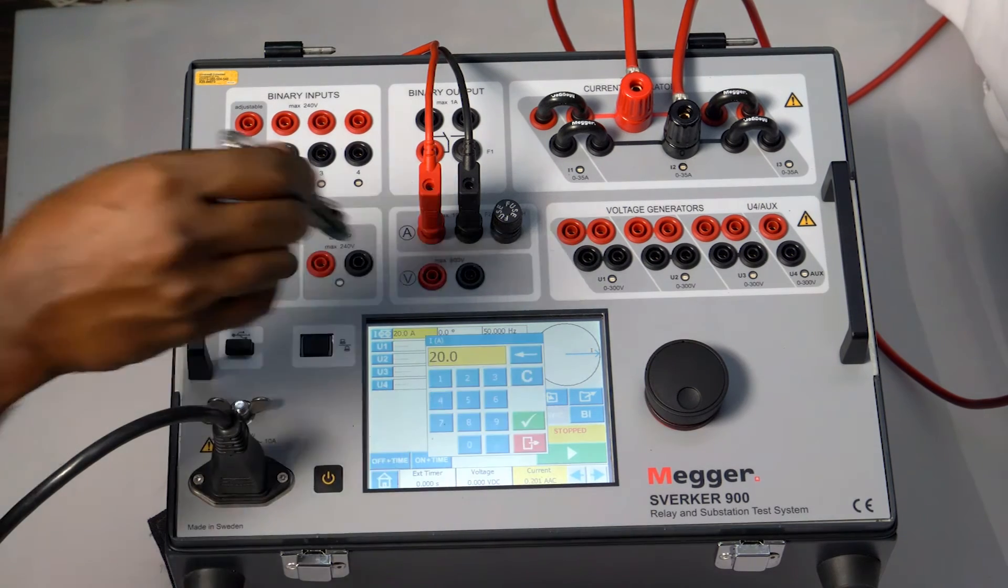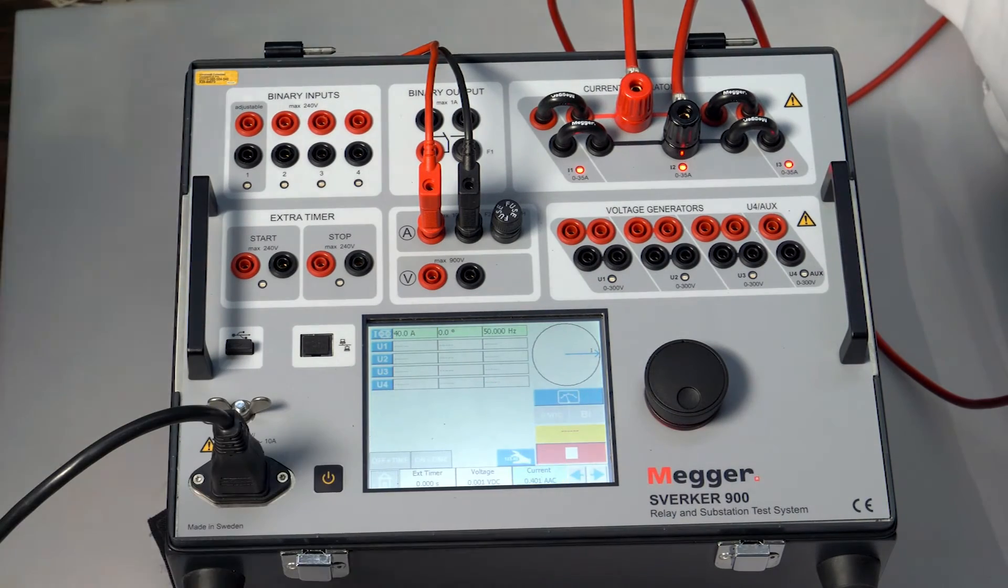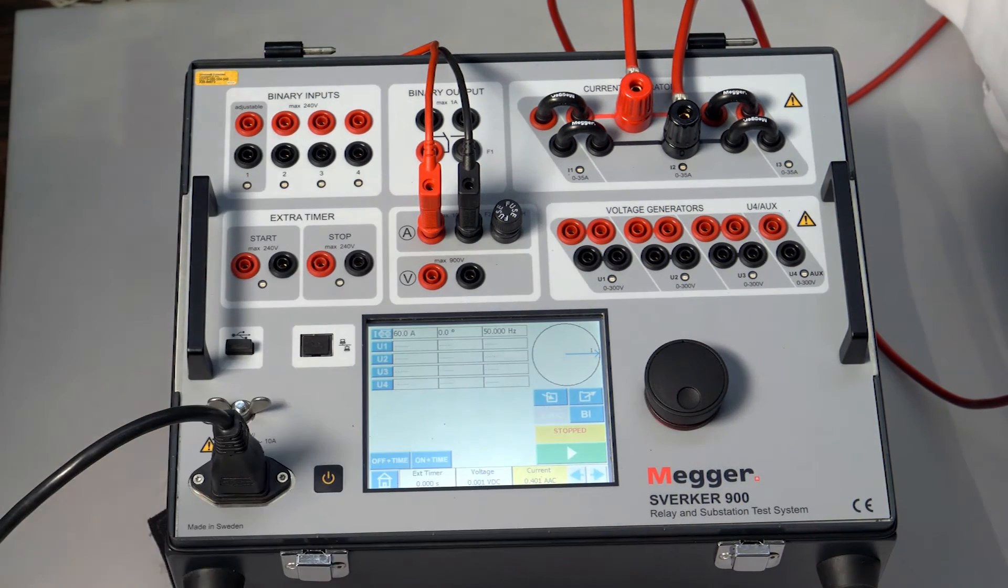Let me repeat for 40 amps. Theory value is 0.4. The reading is 0.401. 60 amps theoretical calculation is 0.6. The measured value is 0.602 amps.